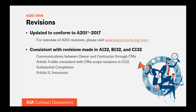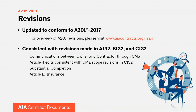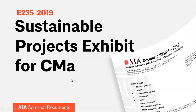We made changes to A232 consistent with the revisions made in the agreements. Communications between the owner and contractors go through the CMA. The Article 4 edits are consistent with the scope revisions Arlen talked about in C132. Some language was edited to clarify how substantial completion is handled, and the Article 11 insurance section was changed as discussed with respect to the exhibit.